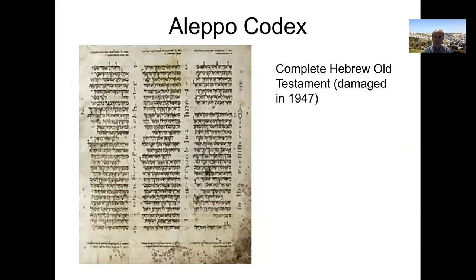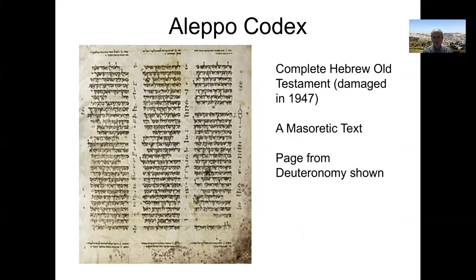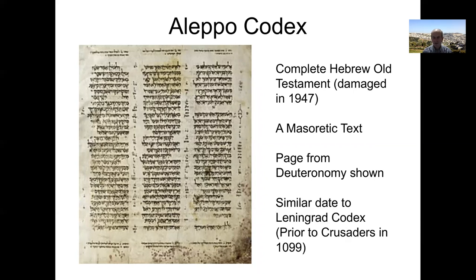The Aleppo Codex is another complete Hebrew Old Testament, although it was partially burned, so they've lost a little bit of it in 1947. It is also a Masoretic text. The page here is a picture of the portion of Deuteronomy. It's a similar date to the Leningrad Codex — I don't think they've got this one right down to the year, but it was around when the Crusaders came to Jerusalem in 1099.